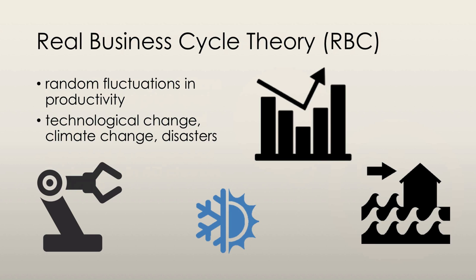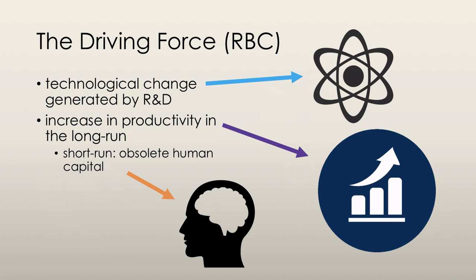Real business cycle theorists see random fluctuations in productivity as the cause of economic fluctuations. The driving force is said to be technological change; however, other factors such as international disturbances, climate change, and natural disasters also impact the business cycle. The driving force of productivity growth according to the real business cycle theory is technological change.